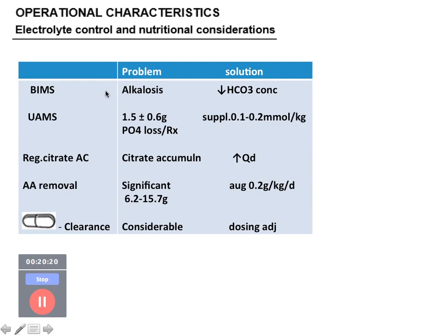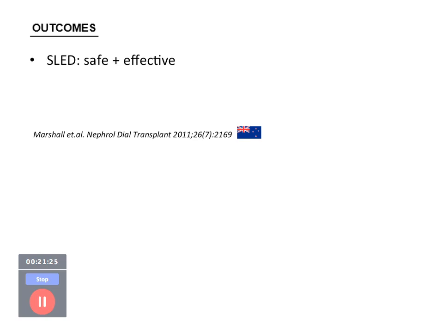Some problems reported with SLED include: alkalosis — solution is to reduce bicarbonate concentration in dialysate; phosphate loss of approximately 0.6–1.5 grams — solution is to supplement phosphate; citrate accumulation with citrate anticoagulation — solution is to increase dialysate flow; significant amino acid or protein loss — supplement protein intake by 0.2 g/kg/day. Drug clearance is also considerable, so dosing adjustments may be necessary.